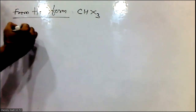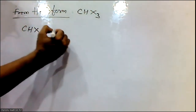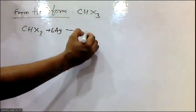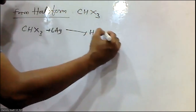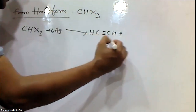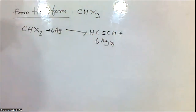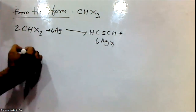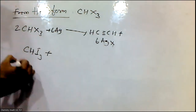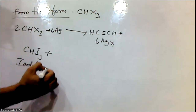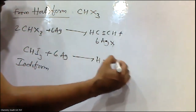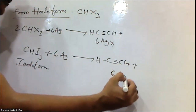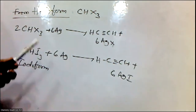CHX₃ on heating with silver gives acetylene. This CHX₃ is called iodoform, which on heating with silver gives acetylene (C₂H₂).